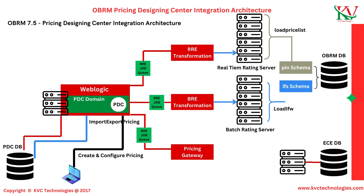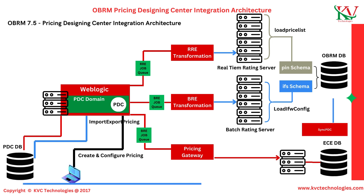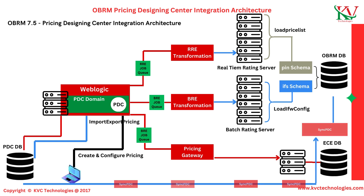The Transformation Engine executes the Load Pricelist Utility in the OBRM Server using RRE, and the Load IFW Config Utility in Batch Rating Server using BRE. When using ECE for usage charging, the ECE Pricing Updater automatically converts pricing components configured in PDC into the format required by ECE and loads them into ECE. The ECE Pricing Updater is packaged with ECE. The SyncPDC utility provides the capability to synchronize setup components defined in BRM with PDC, and also synchronizes event data defined in the rating system with PDC.